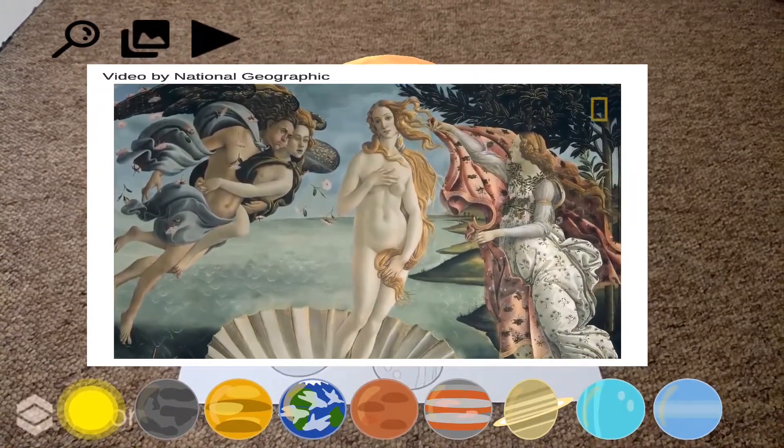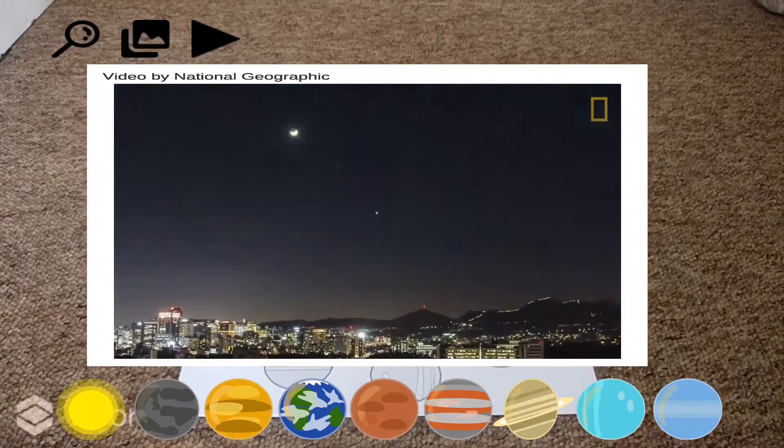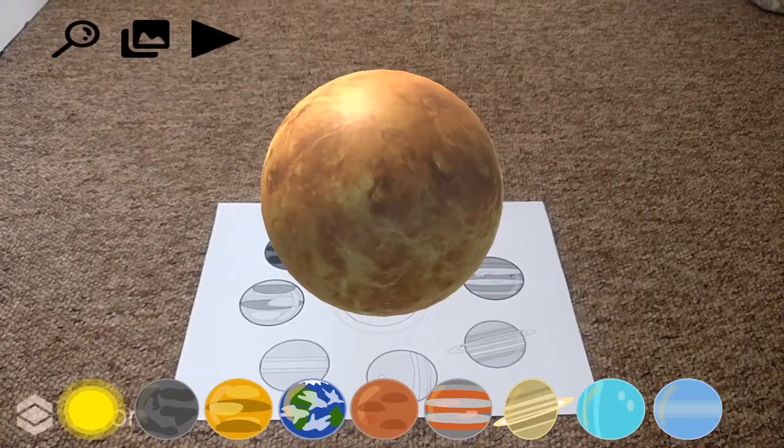Named after the ancient Roman goddess of beauty, Venus is known for its exceptional brightness in the night sky.